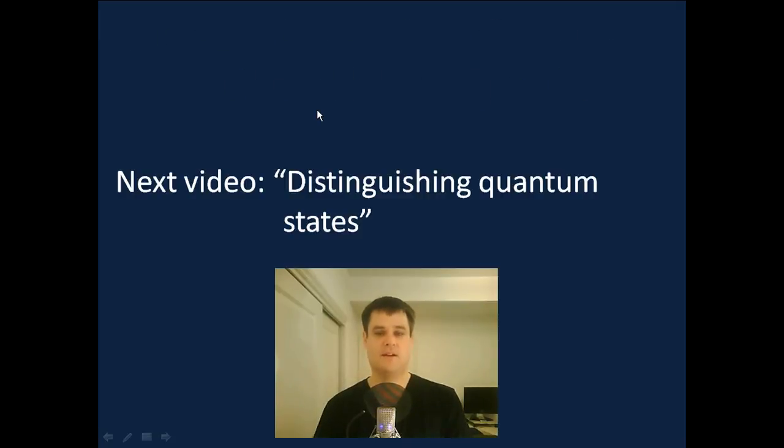OK, that concludes that video. In the next video, we're going to come back and we're going to look at another element of the superdense coding protocol, in particular the bit at the end, where the person receiving the information basically has to distinguish between four different quantum states. And so in the next video, we're going to look at some general facts about when it's possible to distinguish quantum states from one another.